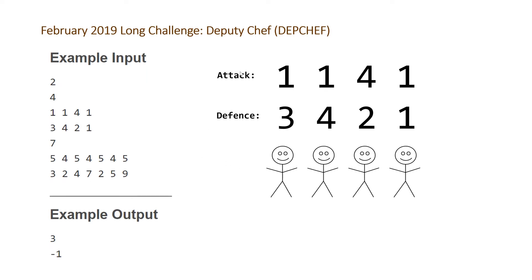So we have four soldiers, each with an attack and a defense. The problem tells a story about how they're all standing in a circle in the order specified, so the first soldier is next to the last soldier as well. At a certain point in time they're all going to attack each other, and you can either attack the person on your left or the person on your right. In the worst case both the person on your left and the person on your right are going to attack you.